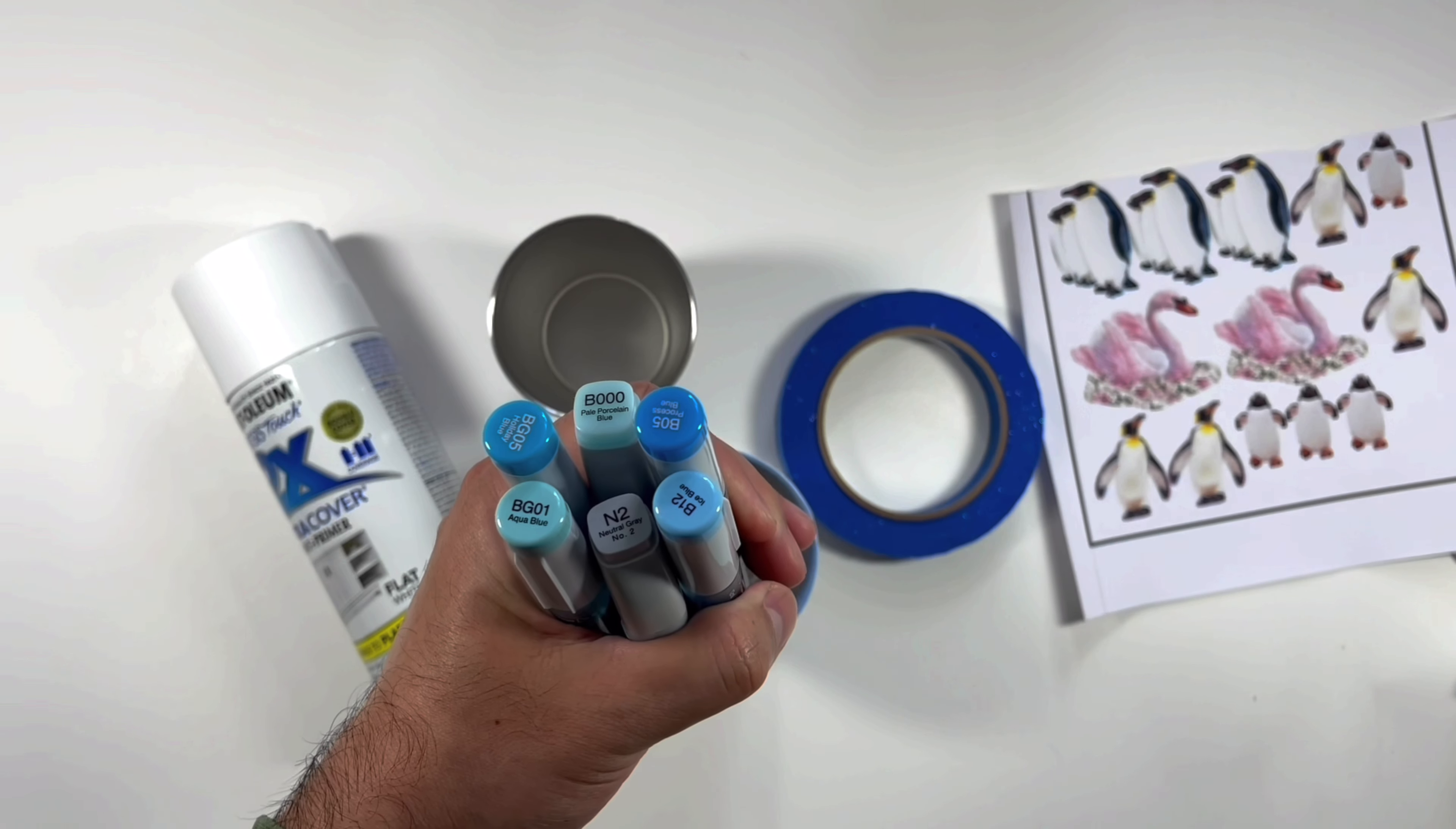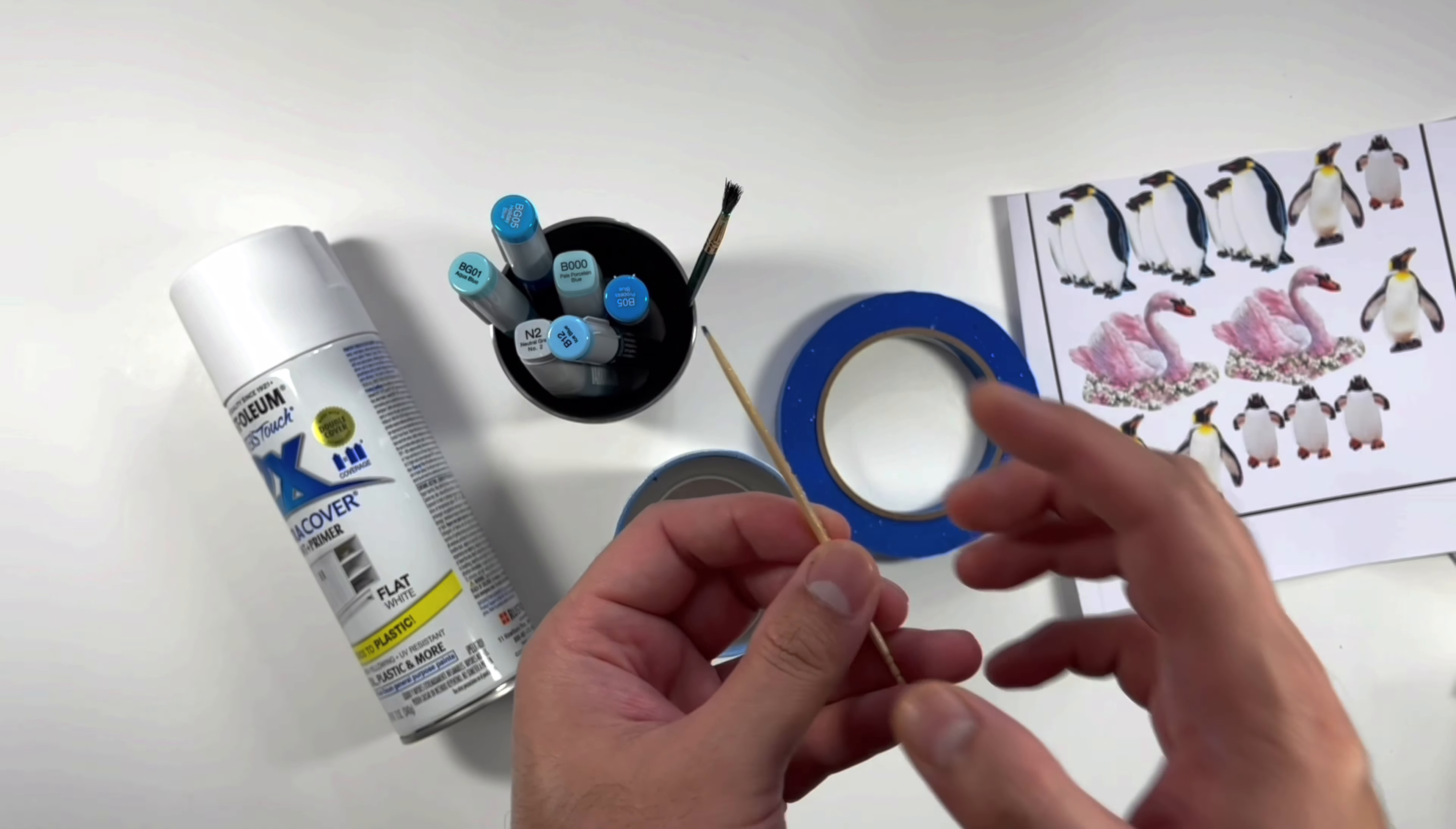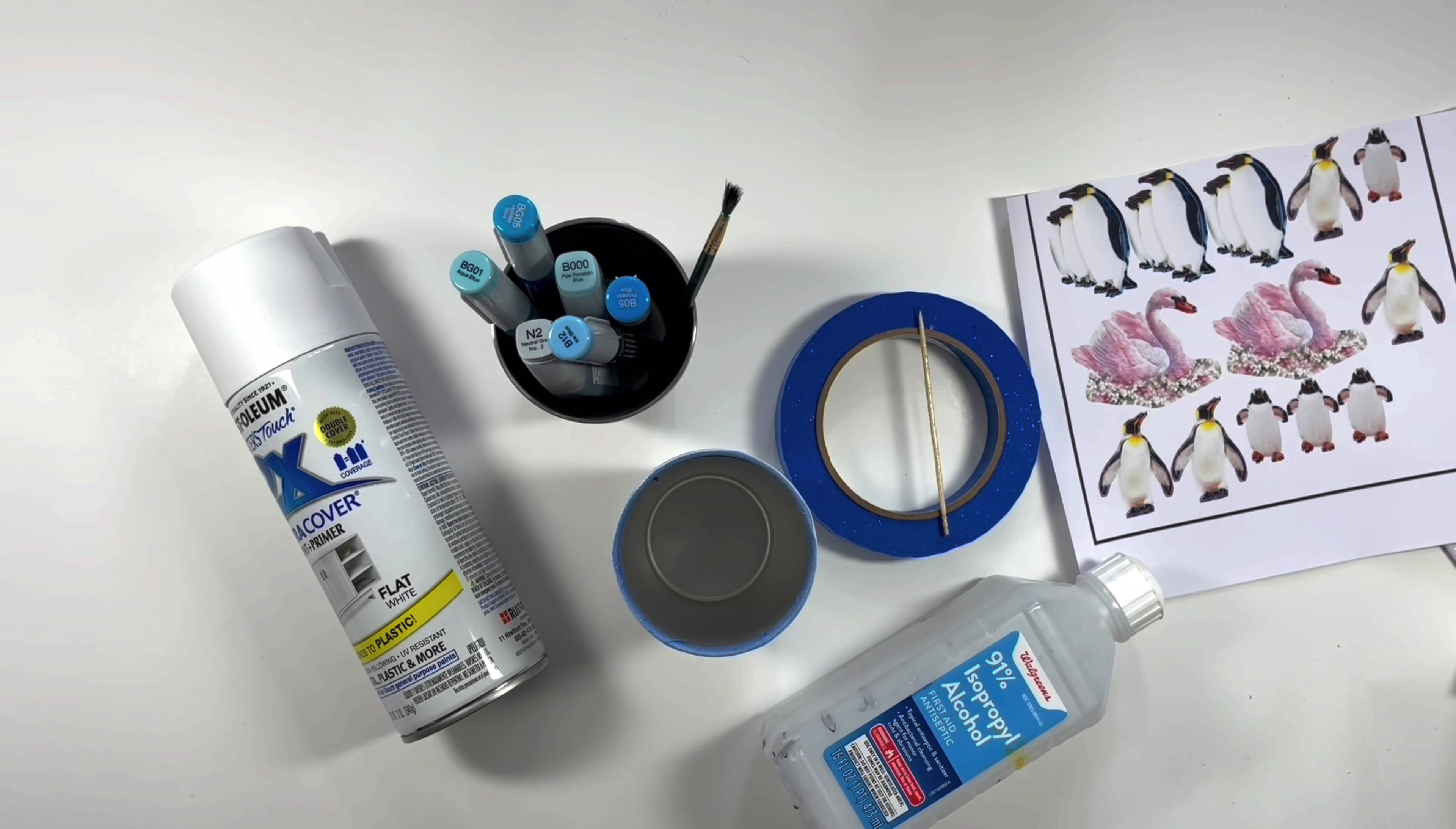I will be using these alcohol inks to paint the background for the tumbler, with a paintbrush and more importantly a toothpick. The tip of the toothpick is coated with resin so that the inks do not get absorbed in the wood but are transferred to the tumbler. And lastly, I will be using some isopropyl alcohol to dilute the inks.